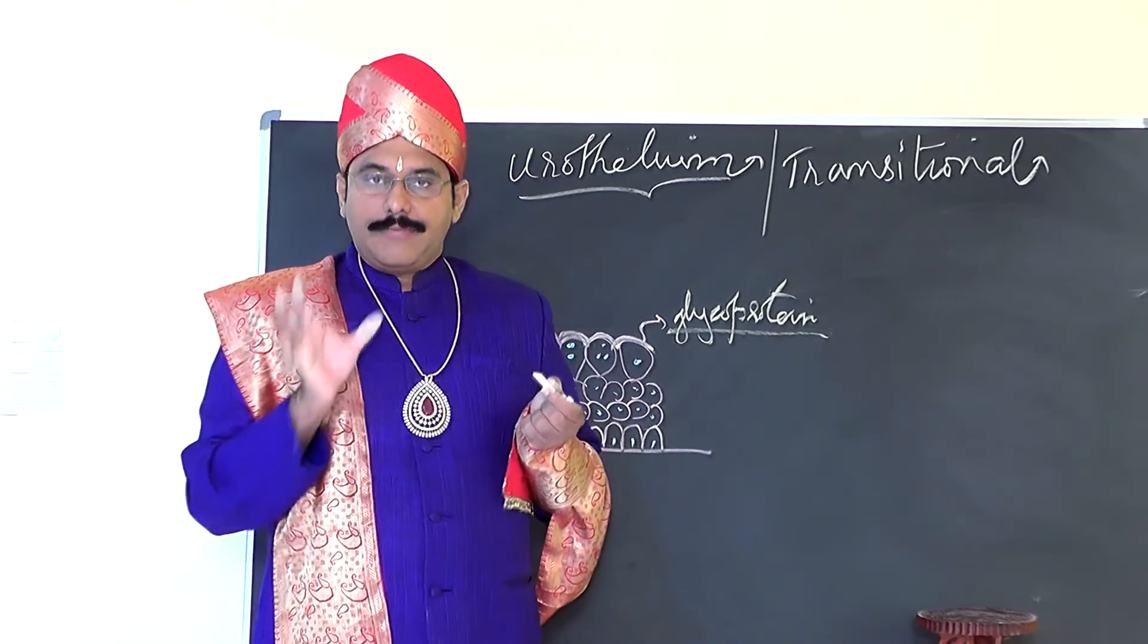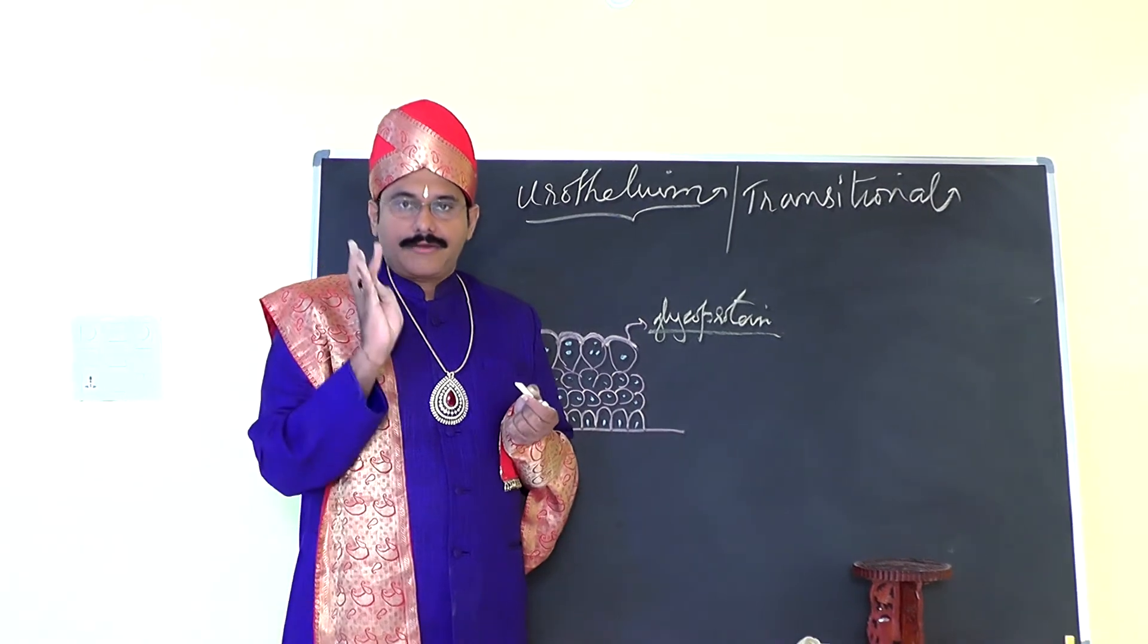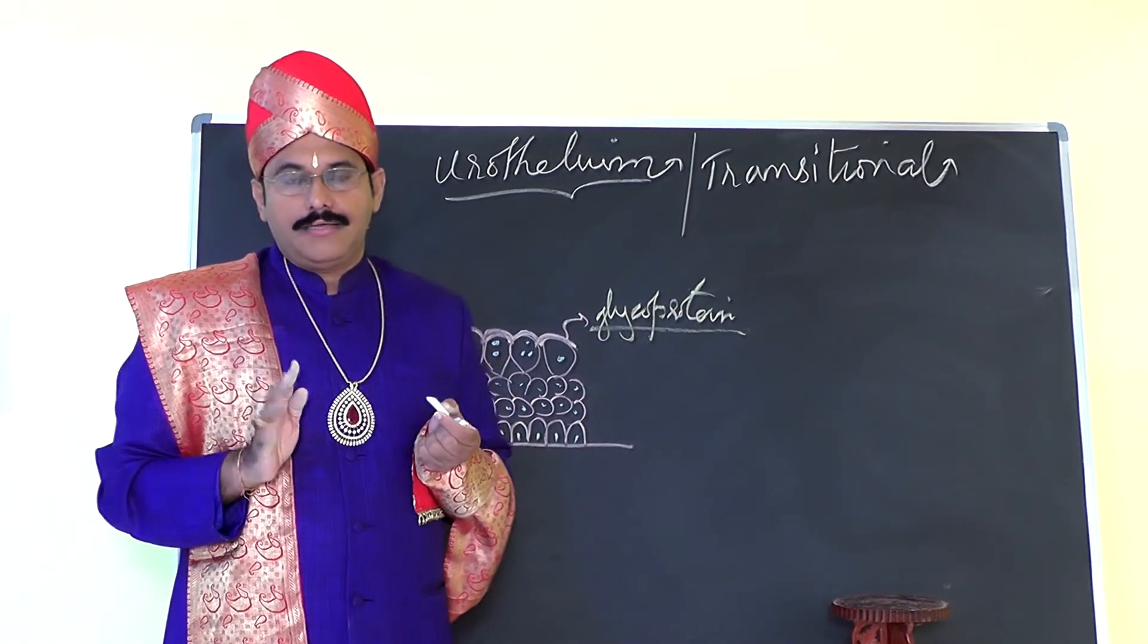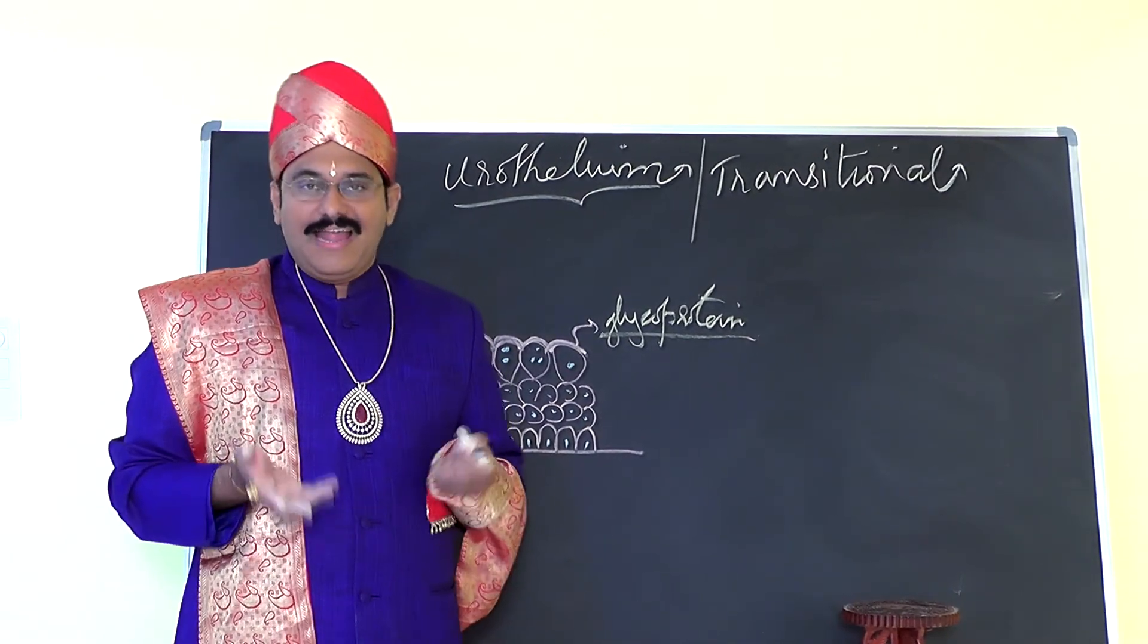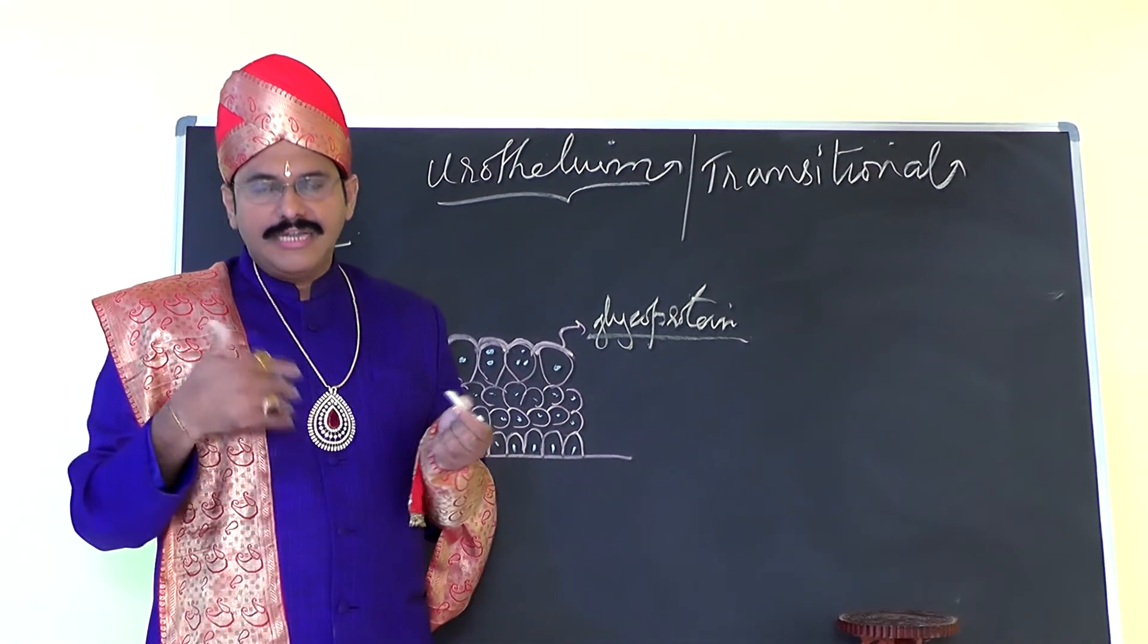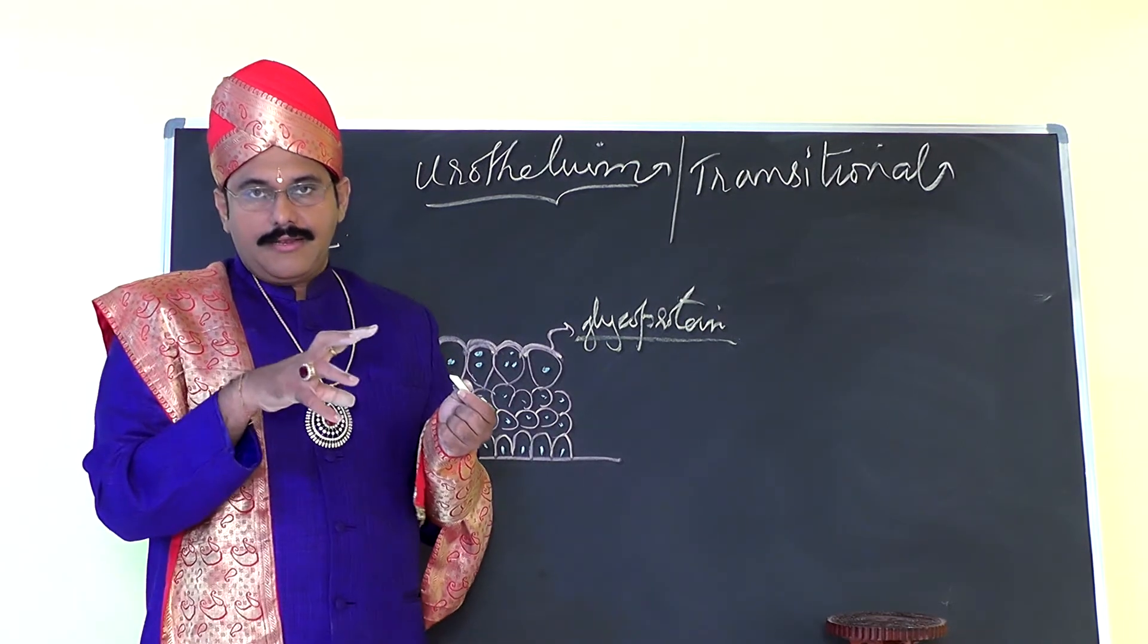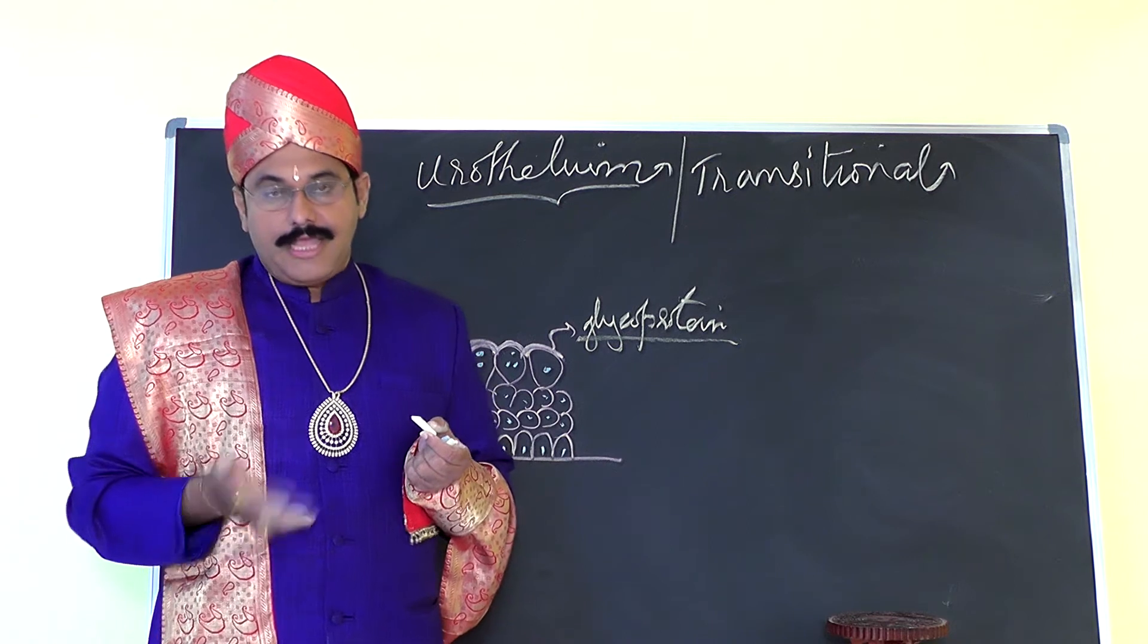Urothelium is the epithelium present in the renal calyces, renal pelvis, ureter, and urinary bladder. In all these areas, urine is present. Urine is waste for elimination, and it can have substances that are toxic if standing for long hours in the body.